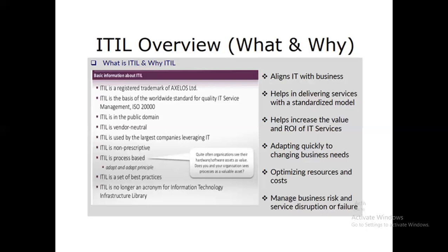Once you automate things and create documentation for recurring problems, your resources can be used in more value-adding functions. Even in cost terms — for example, checking how many IT assets are underused — all of that happens when you follow IT service management practices. You can also manage business risk and service disruption or failure. You may have heard of BCP — Business Continuity Plans — where if something goes wrong at the primary site, you invoke operations from the secondary disaster recovery site.